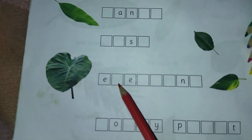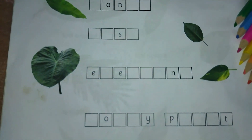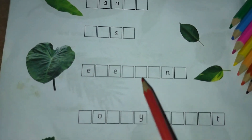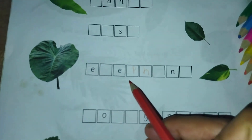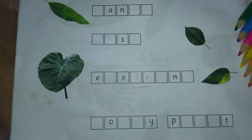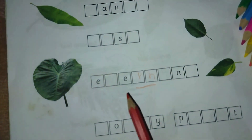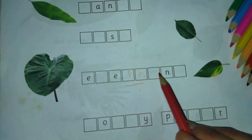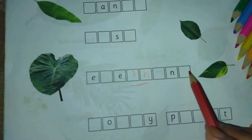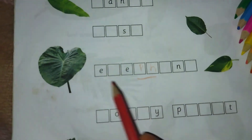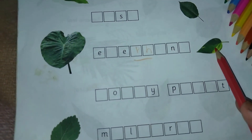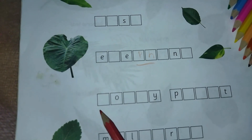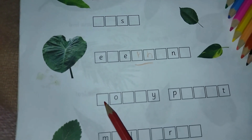E-L-E, P-H — P and H is a digraph which makes the sound of F. So it is P-H-A-N-T — elephant leaf. This one is the money plant leaf.